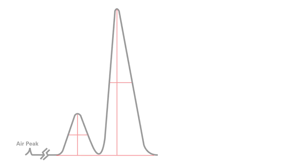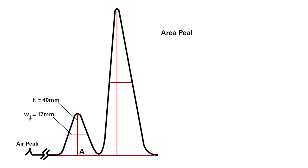Let's review the calculations we have performed. Peak A is the minor product. It has a height of 40 millimeters and a width at half height of 17 millimeters. The area of peak A is 680 millimeters squared.